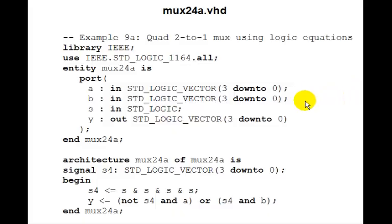This shows you how to do it. Here, a, b, and y are all 3 down to 0. In VHDL, if we write the logic equation y is not s and a or s and b, like you might think you could do, it turns out that the arrays have to be the same. So we really can't just use s here. We have to define a signal s4, which is also 3 down to 0.